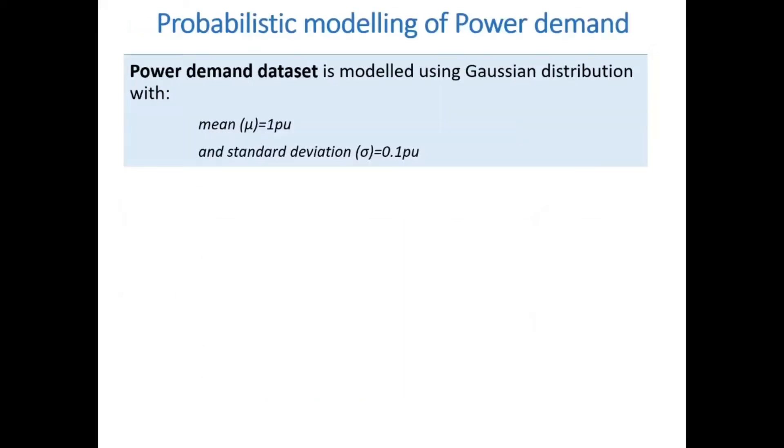The power demand in an electrical power system can fluctuate significantly depending on the time of day and year. It is modeled using Gaussian distribution with mean equal to 1 per unit and standard deviation equal to 0.1 per unit in this case.